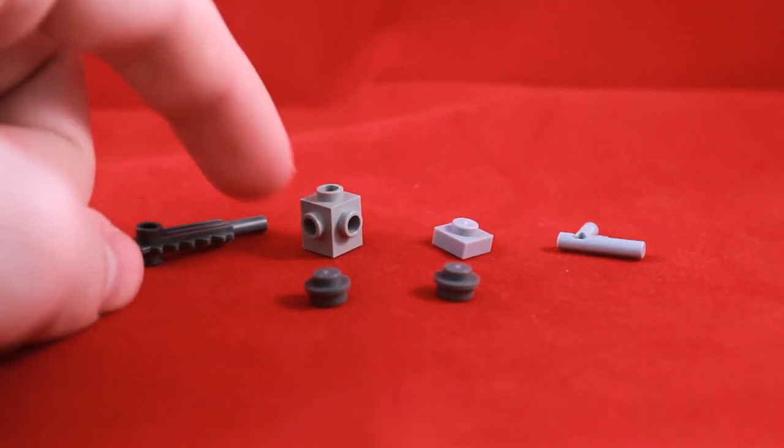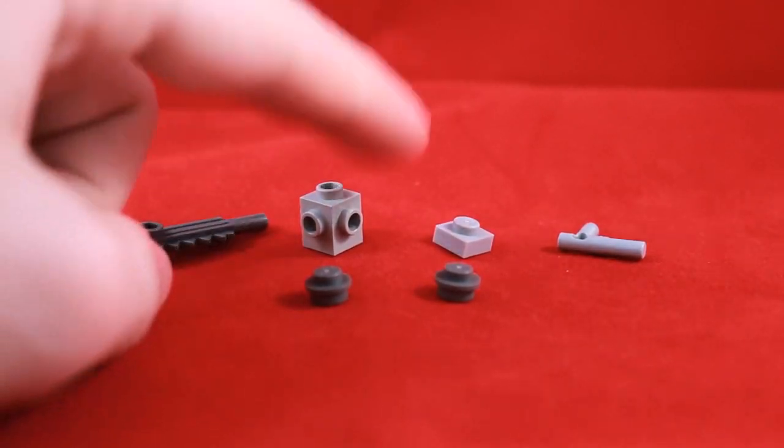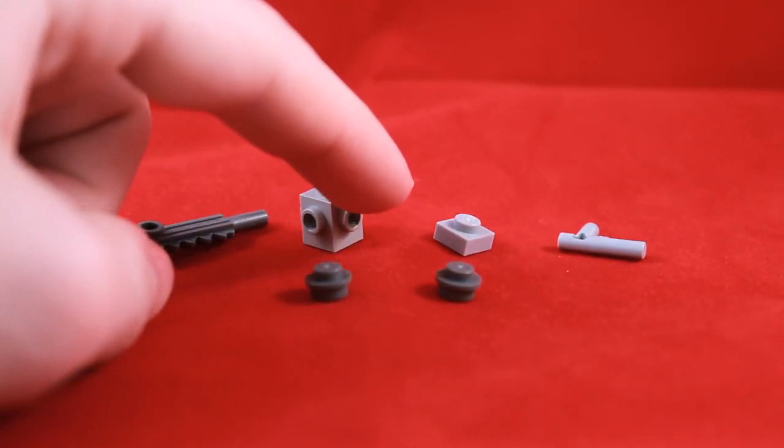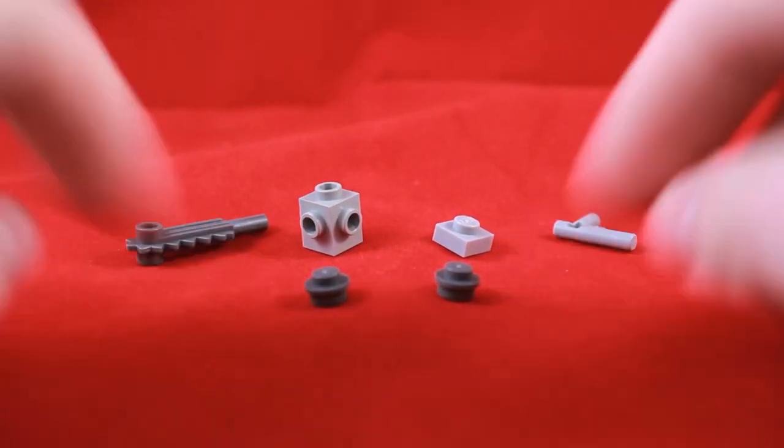You'll need one of these 1x1 bricks with four studs on each side, a 1x1 plate, one of these little nozzle elements, and two 1x1 studs. So we can move them all aside.